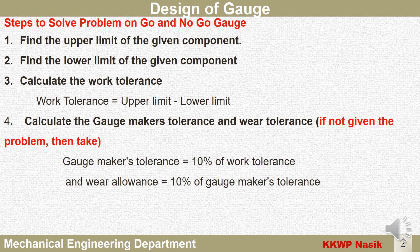There are a few steps to solve the problem on a go and no-go gauge — that is, how to design the gauge. First step is find the upper limit of the given component. Second step is find the lower limit. Third step is calculate the work tolerance, which is calculated by the difference between the upper limit and lower limit.